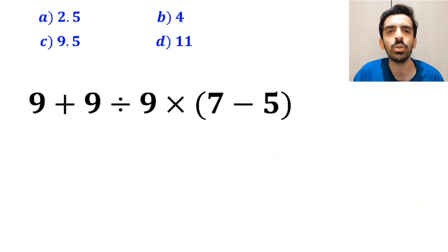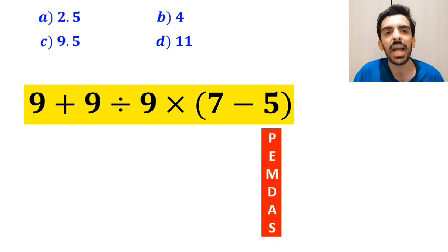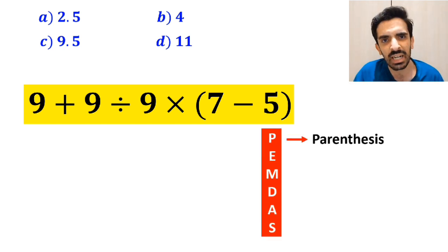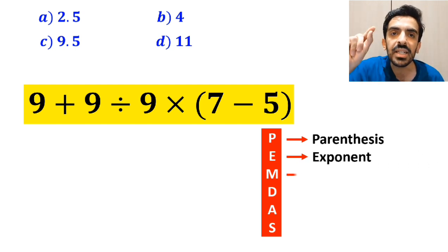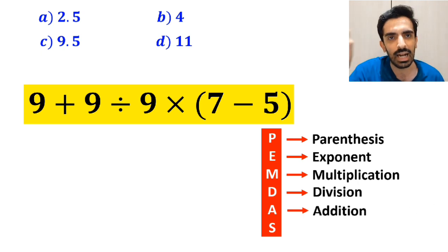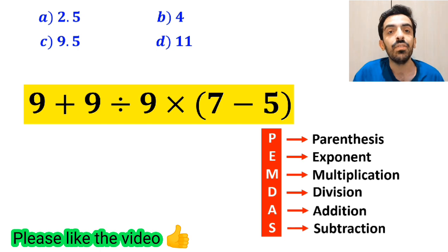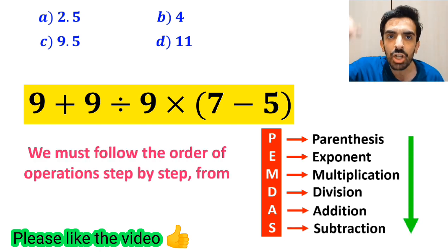Alright, now let me show you how to solve this expression properly. To solve this problem, we must follow the PEMDAS rule. In this rule, P stands for parenthesis, E stands for exponent, M stands for multiplication, D stands for division, A stands for addition, and S stands for subtraction. We must follow the order of operations step by step from top to bottom.